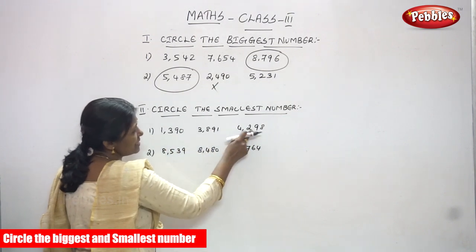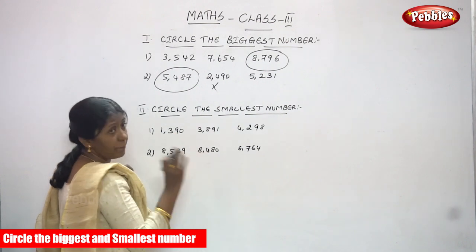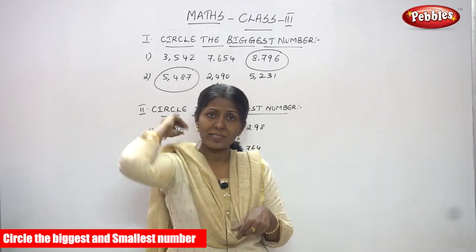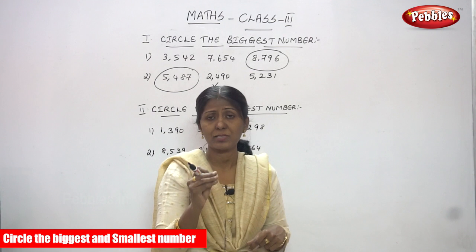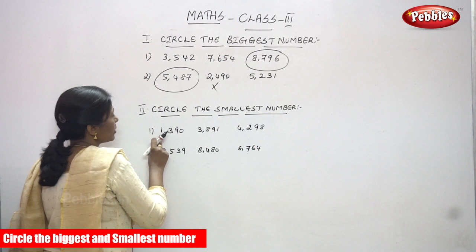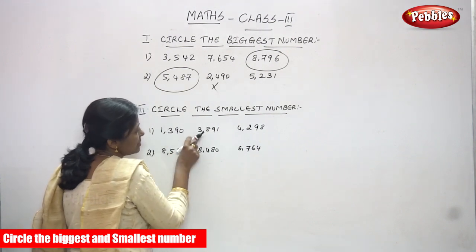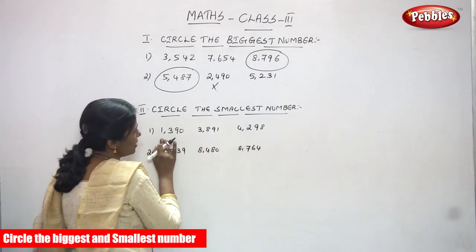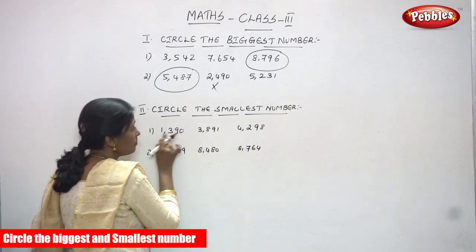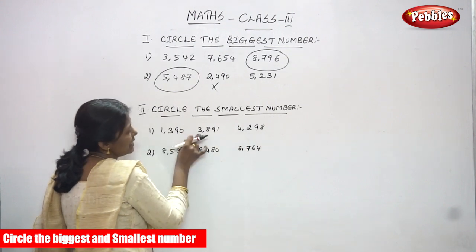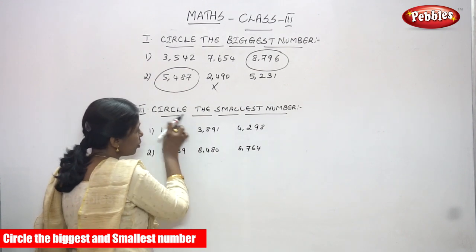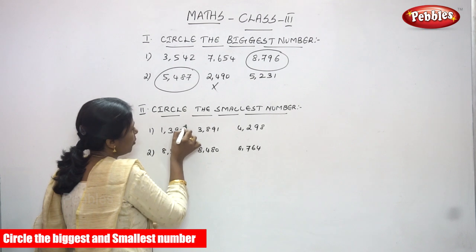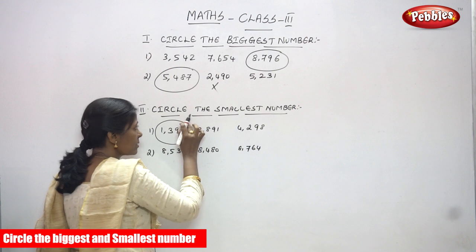As I told you, if you have a four-digit number, compare only the thousands place value — whether you want to circle the biggest or the smallest. The thousands digits here are: 1000 for the first number, 3000 for the second, and 4000 for the third. The question asks which is the smallest. Starting with 1000, 3000, and 4000, clearly 1390 starts with 1000, so 1390 is the smallest number. Circle it.